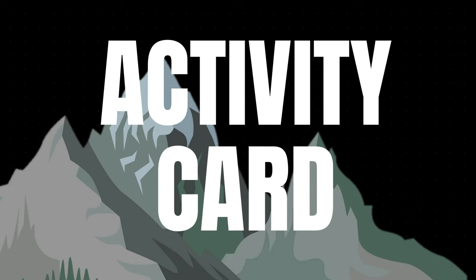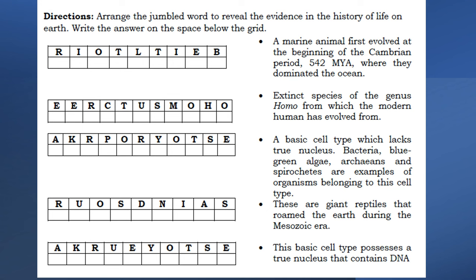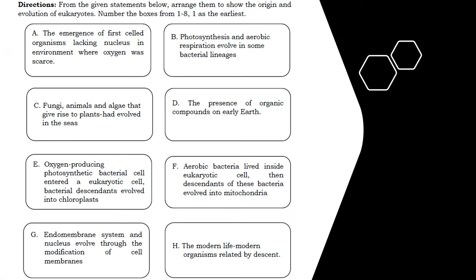Let's have our activity cards. For Activity One, directions: arrange the jumbled word to reveal the evidence in the history of life on Earth; write the answer in the space below the grid. Your teacher will give you two minutes to answer. For Activity Two, from the given statements below, arrange the following boxes to show the origin and evolution of eukaryotes, numbering the boxes from one to eight — one as the earliest and eight as the most present. Again, two minutes to perform this. Good luck.